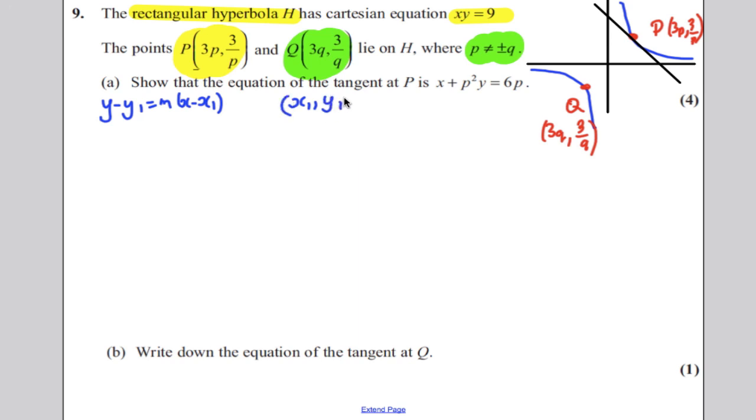Well certainly we do, x₁, y₁, the point's on the line, where they must be point P. P is the only point we know is on the line, so that's (3p, 3/p). So we even get a mark for just stating that.